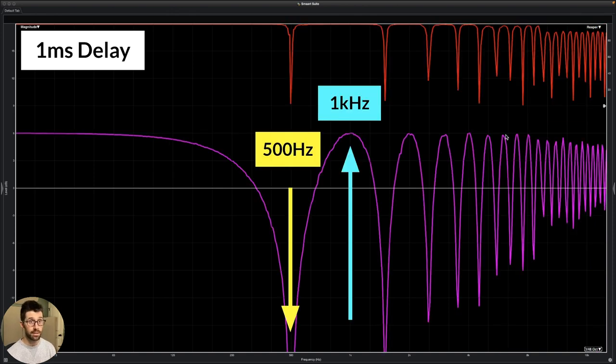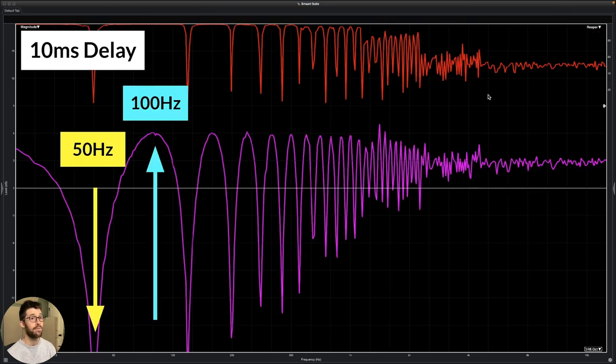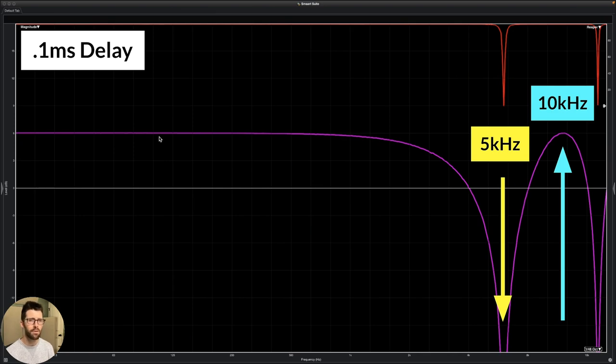Most of the frequency range is left untouched, but this is where we have our cancellation and our peak. Now we move to one millisecond, we already looked at this. We see all these cancellations on top right there. Now we have an even bigger one, 10 milliseconds of delay. Now we have 50 hertz canceling out because 50 hertz takes 20 milliseconds of propagation delay to do a full cycle. So that's half of that, therefore it's 180 degrees offset. That's our first big cancellation. Then we have our first peak at 100 hertz.